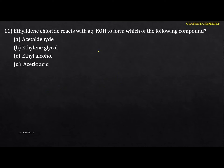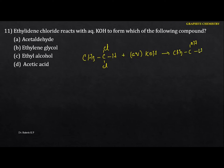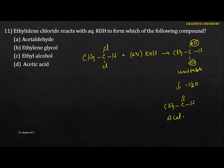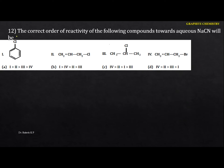Next: ethylidene chloride (a geminal dihalide) reacts with aqueous KOH. Both Cl atoms are replaced by OH, but a geminal diol (two OH on the same carbon) is highly unstable and eliminates water, giving a stable carbonyl compound. The product is acetaldehyde (CH3CHO). The option is A.